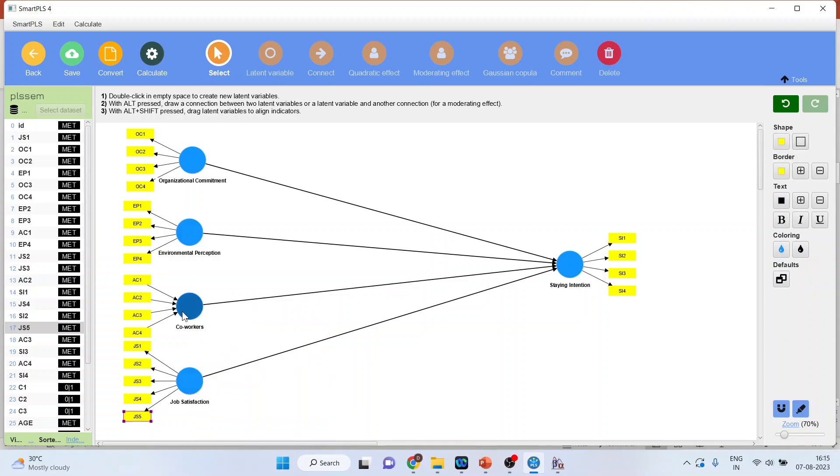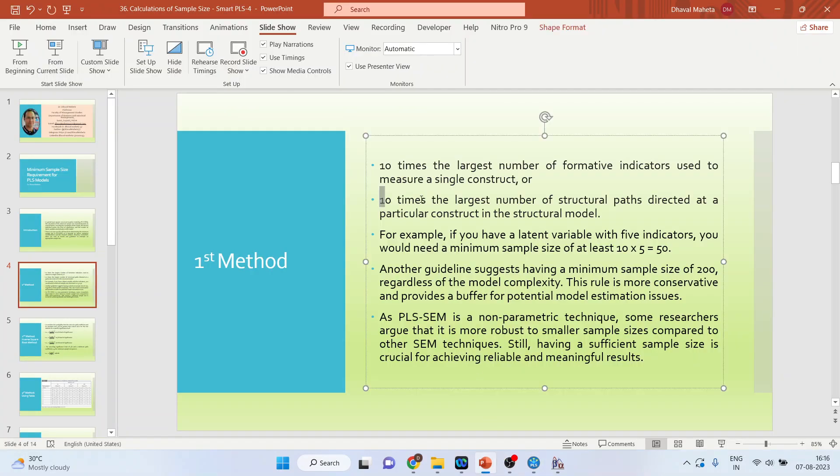Now, the second condition: there are no formative constructs, only reflective are there. You can see here organizational commitment, environmental perception, behavior of the coworkers, and job satisfaction all affecting staying intention. In this case, find out the endogenous construct. It means you will have to identify where all the arrows are moving inside a particular construct. Then you will count 1, 2, 3, 4. So 4 into 10 equals 40. The minimum sample size is 40.